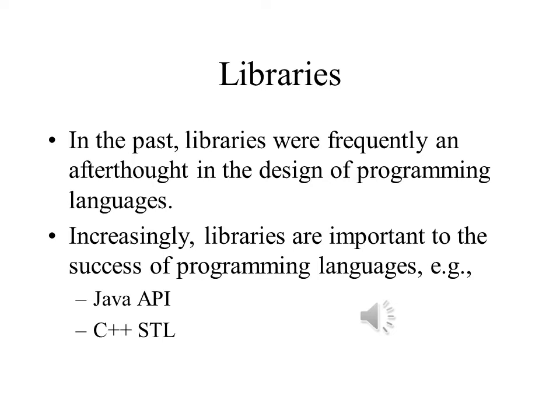When Fortran first came out, the libraries for it were mainly for doing certain types of calculations, such as absolute value or square root. There were other libraries that came out over time, but they were an afterthought. Bacchus and his team were not thinking about them when they were designing the language and developing its compilers. But that's no longer the case. Java's APIs were part of the design criteria of Java from the very beginning, and are a major factor in the language's development and a major factor in its popularity. The same is true of C++'s Standard Template Library.